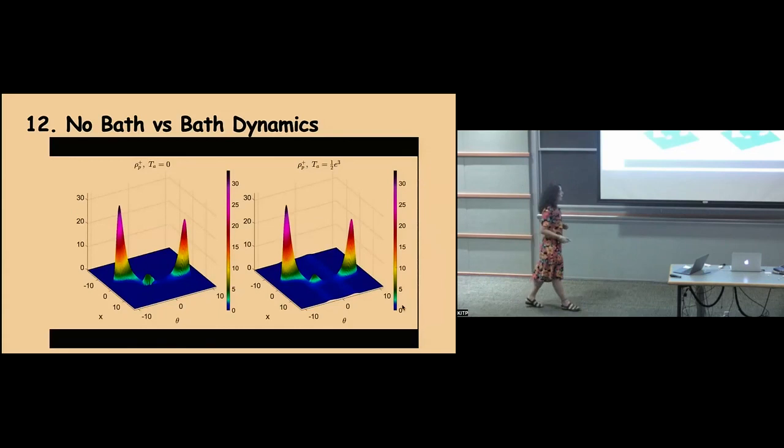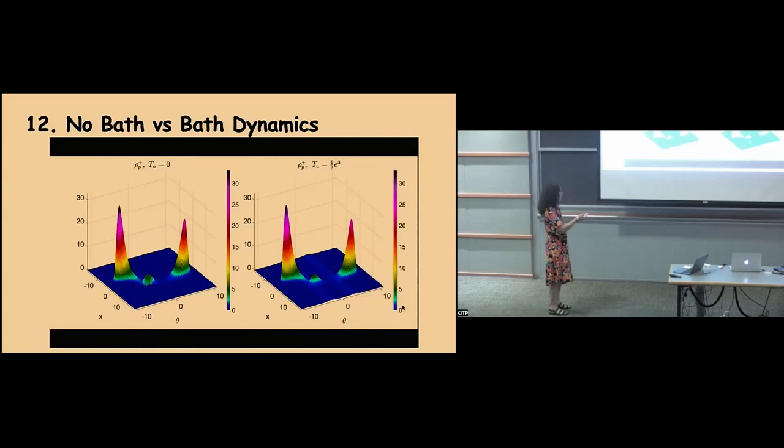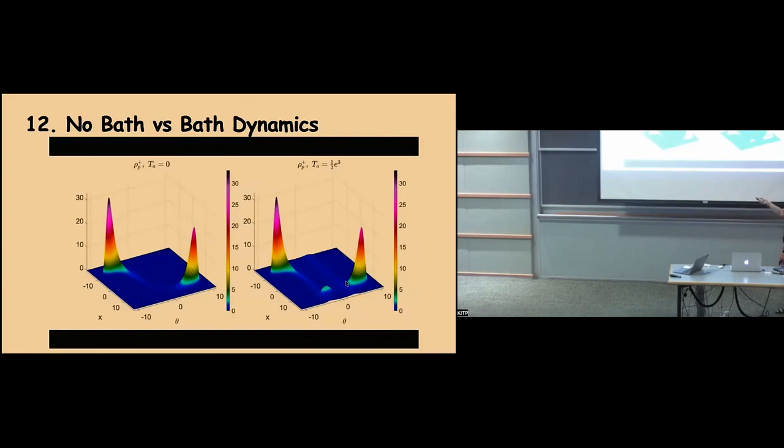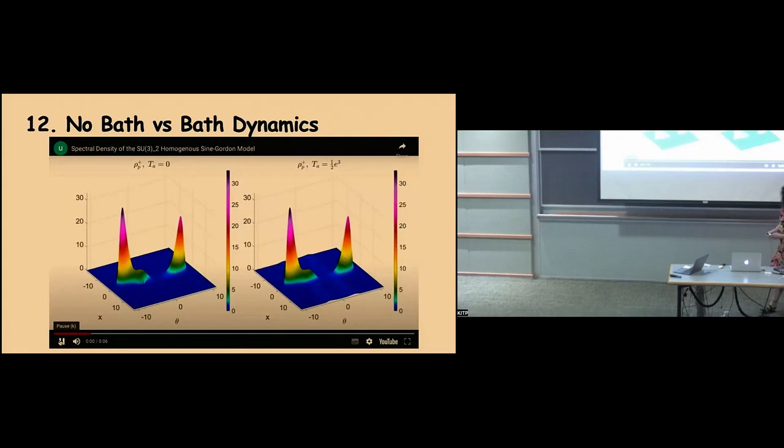Here is a visualization in three dimensions: on one side the situation with no bath where temperature is zero, and on the other with a bath. In the absence of a bath, everything dies and you have a tail. With a bath, the peak is surviving — there is a persistent density riding on top of that little mountain that is the bath.